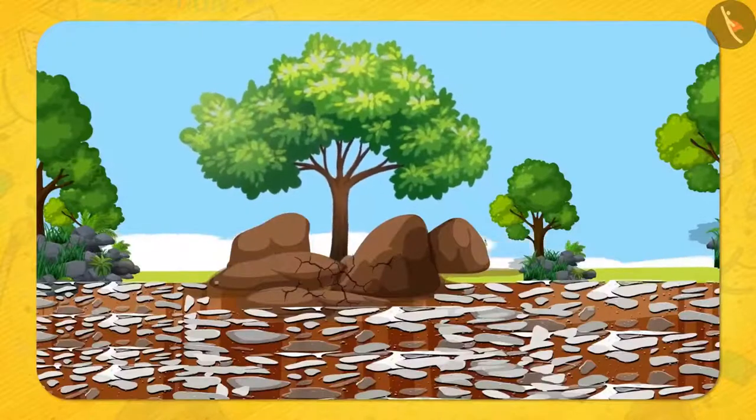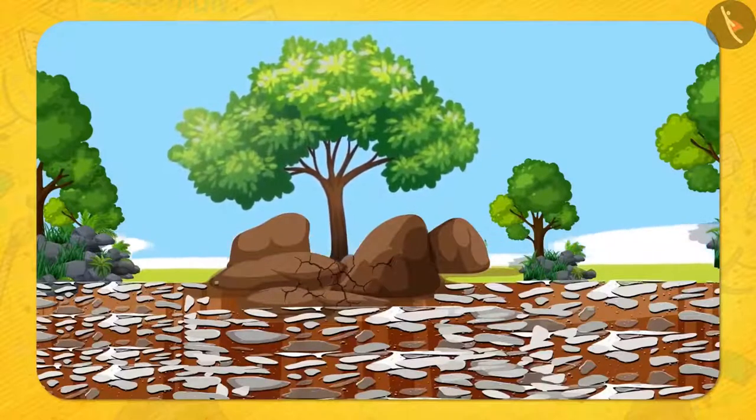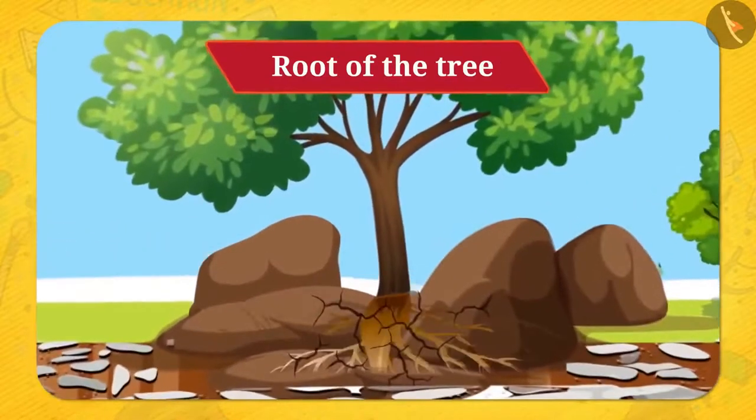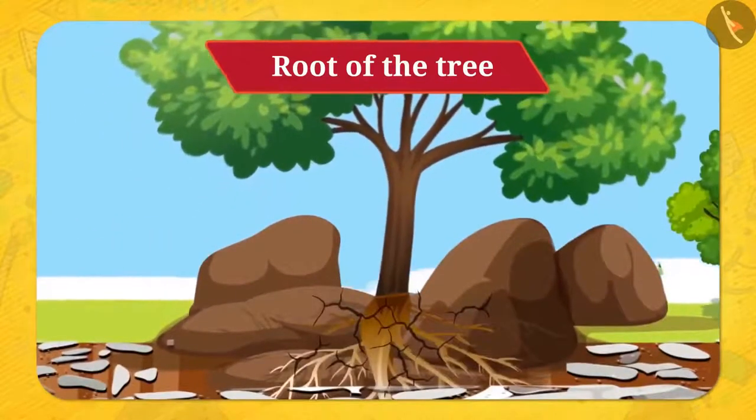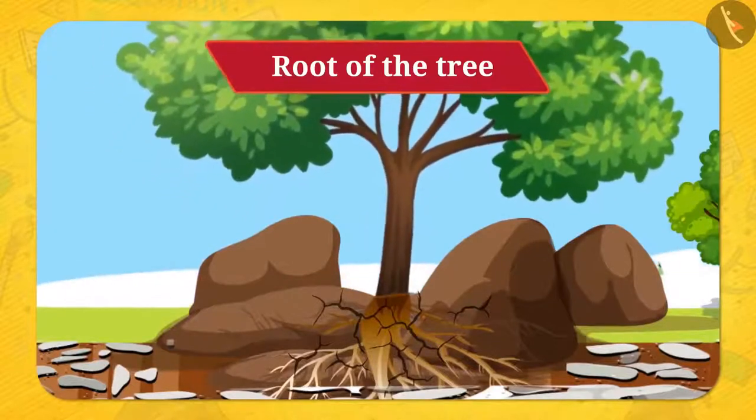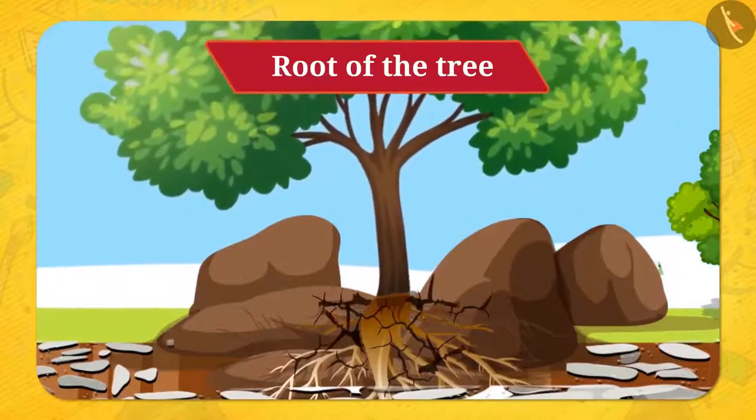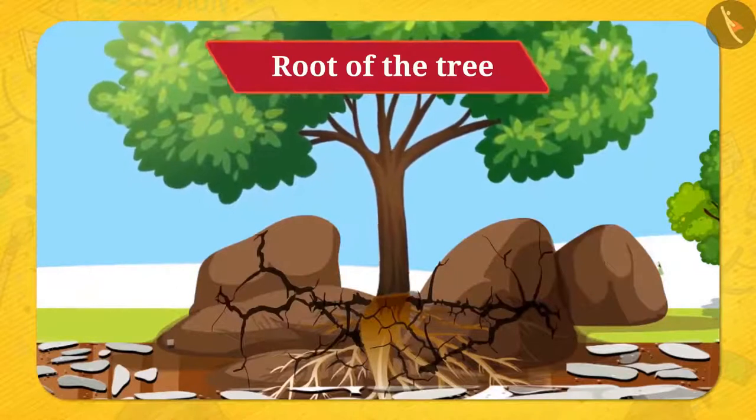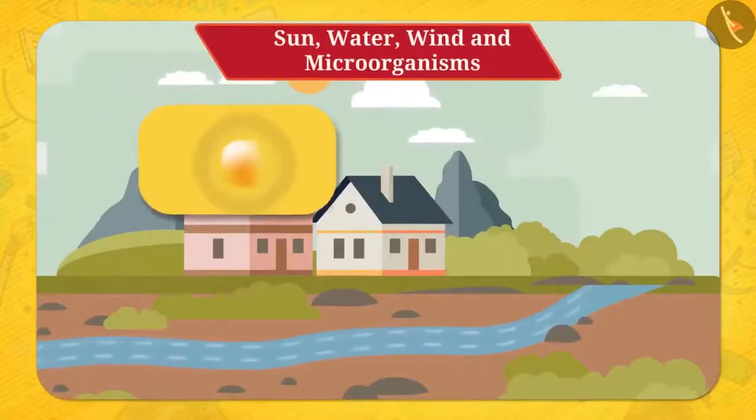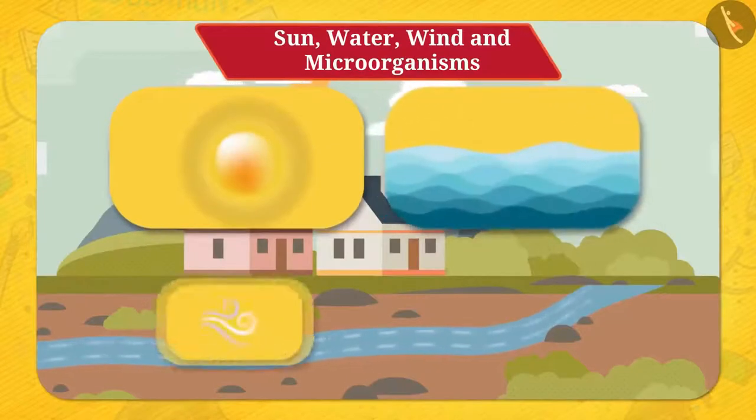You must have seen many times that if a big tree is growing near a big stone, then the root of the tree penetrates inside the crack already present in the stone. So what will happen? Well, as the roots grow, the crack will widen further and eventually break.